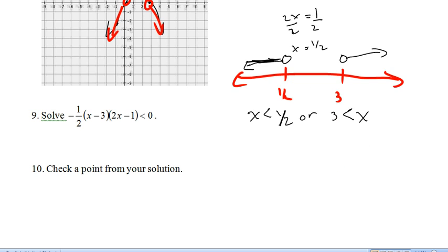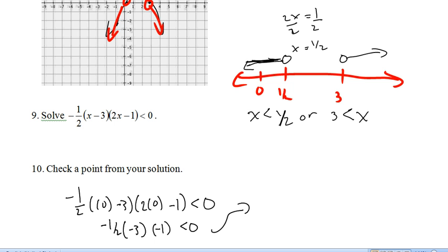And it asks us to just check one point from our solution. So, let's check 0 down here. That's a nice, easy point to check. Negative 1 half times negative 3 times negative 1 is less than 0. So, I've got negative 3 halves is less than 0, which is true.